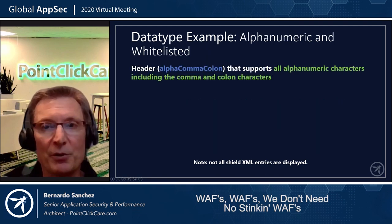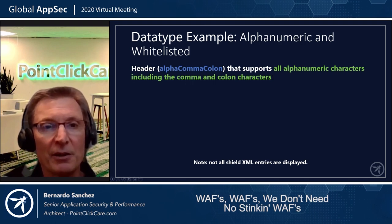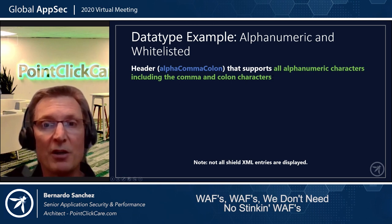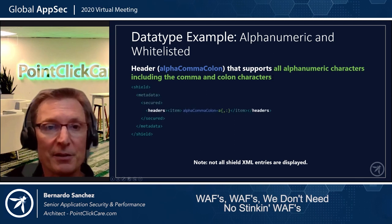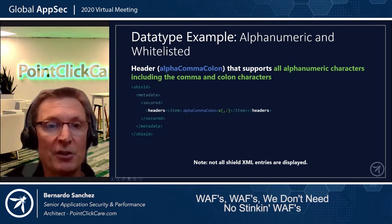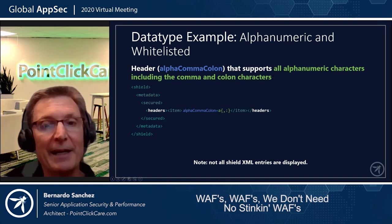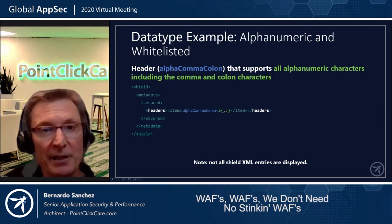Let's take another example: alphanumeric and whitelisted characters for a header. The header name is 'alpha' and it supports all alphanumeric characters including the comma and colon characters. In the shield metadata secured headers section, we have an item with data type A{,:} — that's how you specify a header as alphanumeric plus additional whitelisted characters.